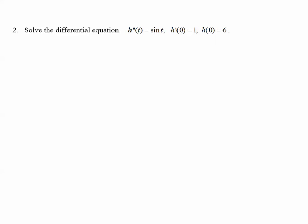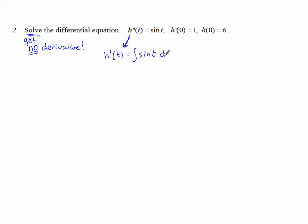Number 2. Solve the differential equation. Notice this is a second derivative: H double prime of T equals sine T. When it says solve the differential equation, that means get to no derivative. If we have a second derivative, we need to work the antiderivative twice. So from the second derivative, to get to H prime of T, the first derivative, we take the antiderivative of this second derivative one time with respect to T. H prime of T equals the antiderivative of sine of T, which is negative cosine of T plus C.